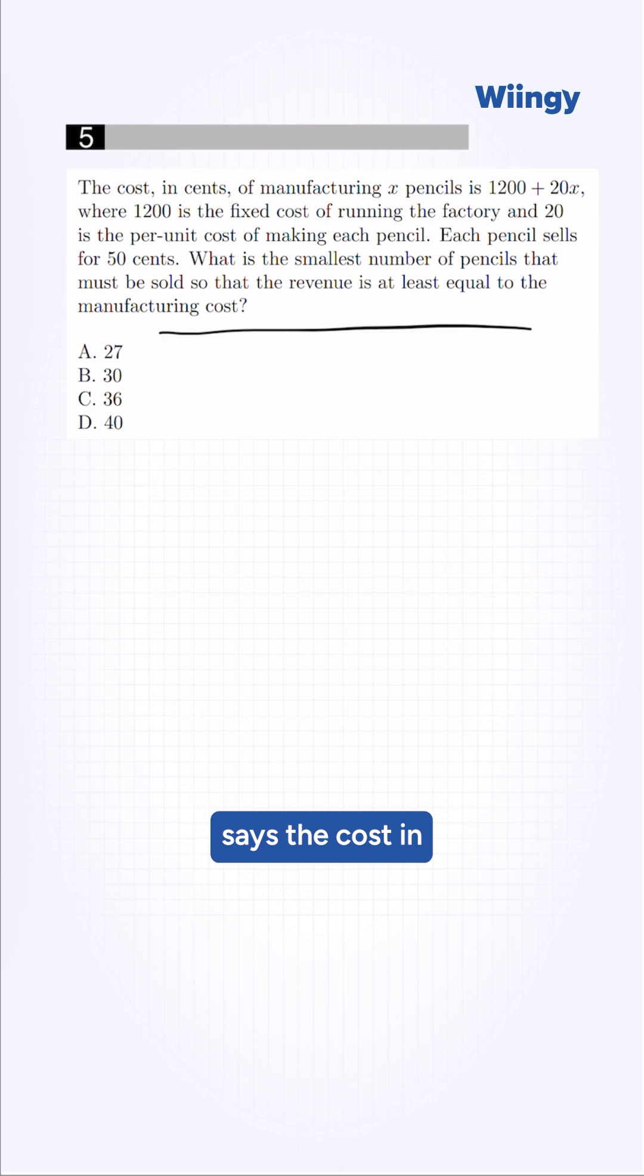The question says the cost in cents of manufacturing X pencils is 1,200 plus 20X, where 1,200 is the fixed cost of running the factory and 20 is the per unit cost of making each pencil.